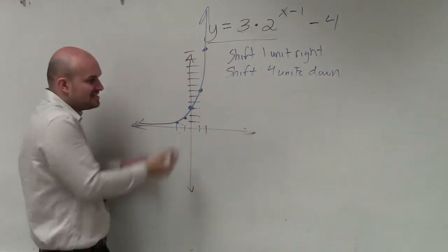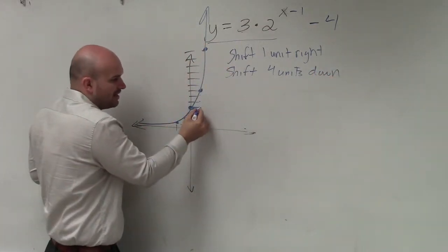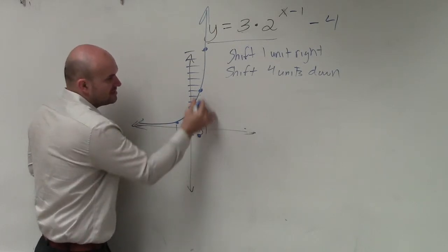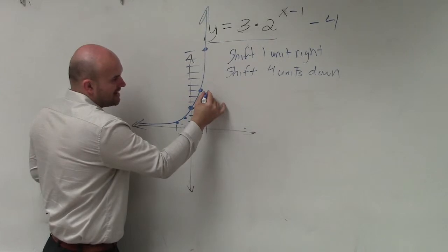Now, all I simply do is take my points and go over 1, down 4. 1, 2, 3, 4. Take this point. Go over 1, down 4.